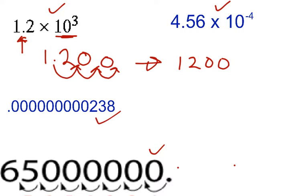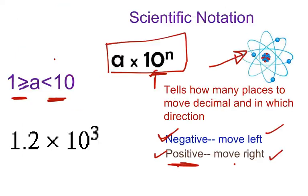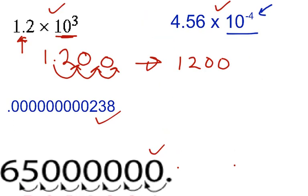Let's do the next one. This is 4.56 times 10 to the negative 4. Once again, we look at the exponent. We see that the exponent is negative, so that tells us our number is smaller than 1. And how many places do we move it? We have to move it four places. Since we have a negative exponent, we have to move it to the left — four places to the left.